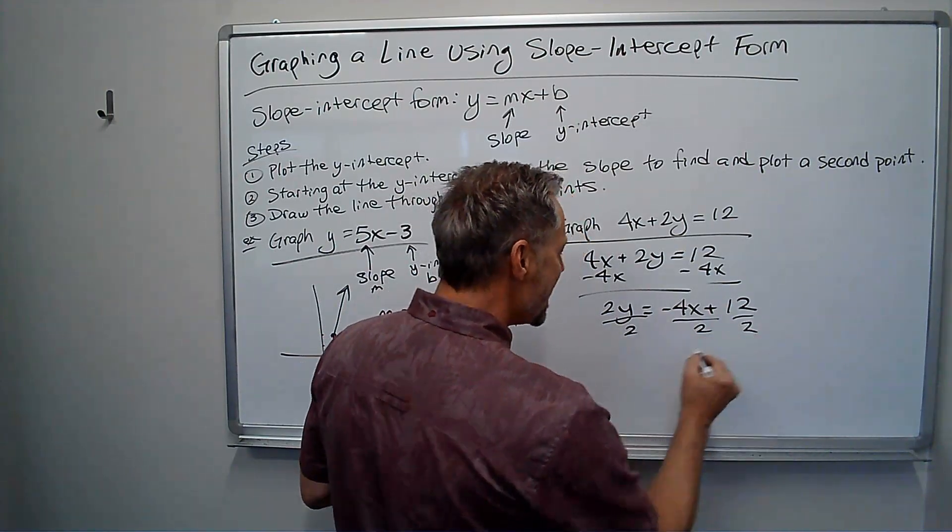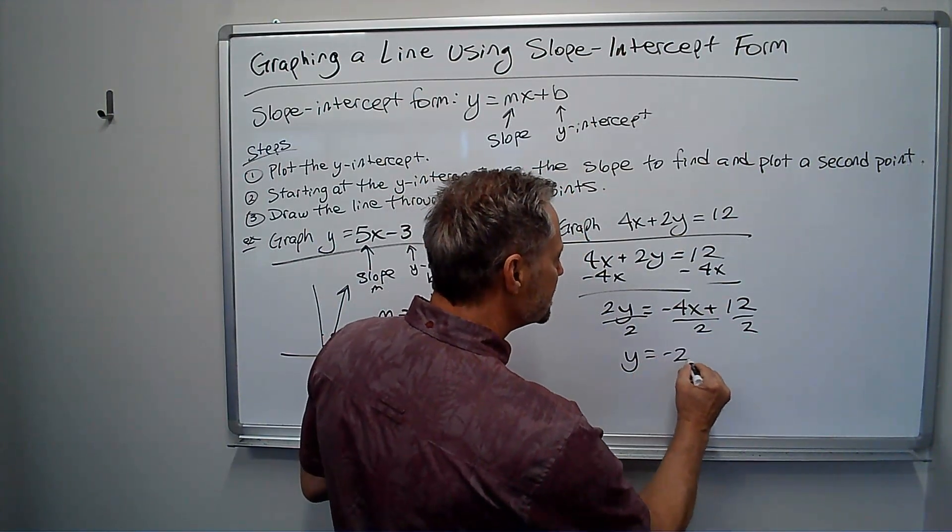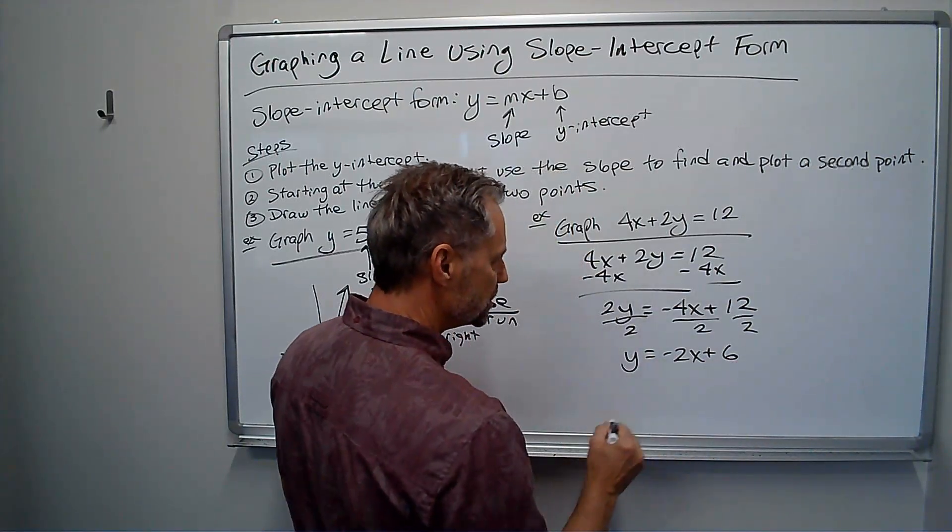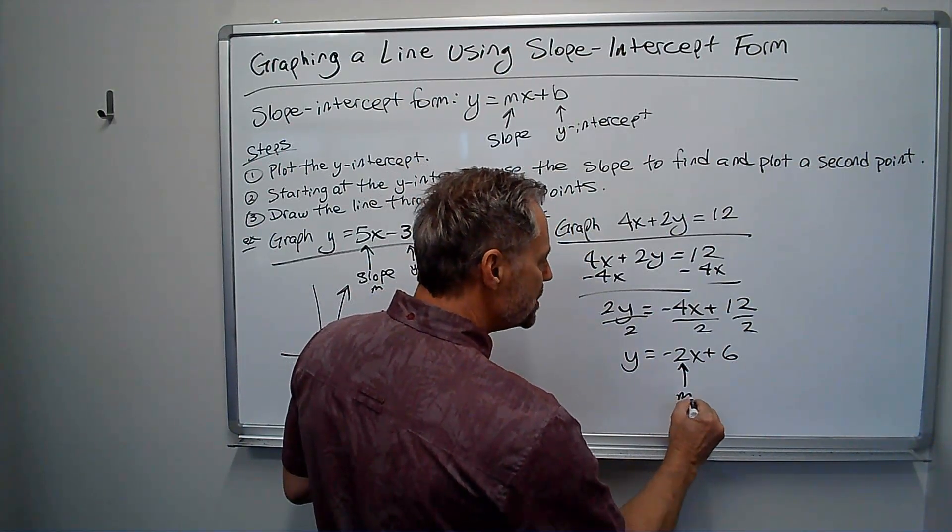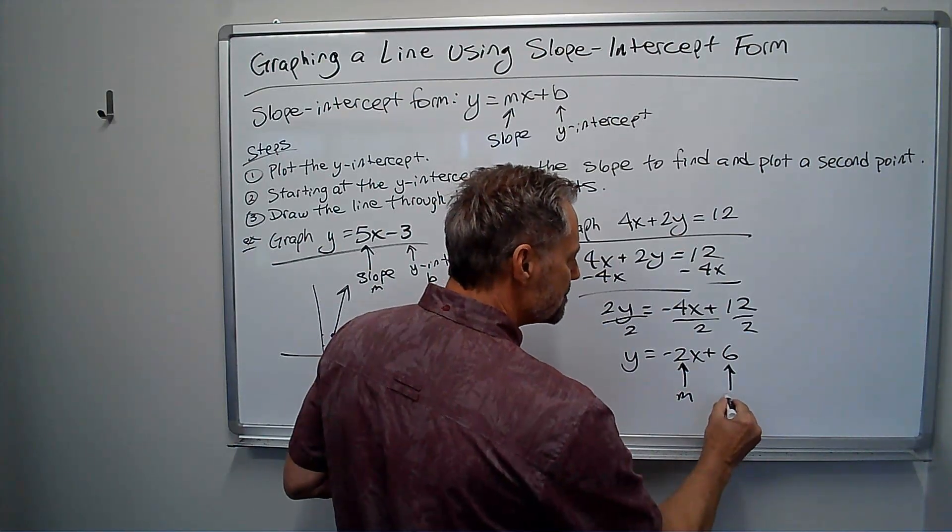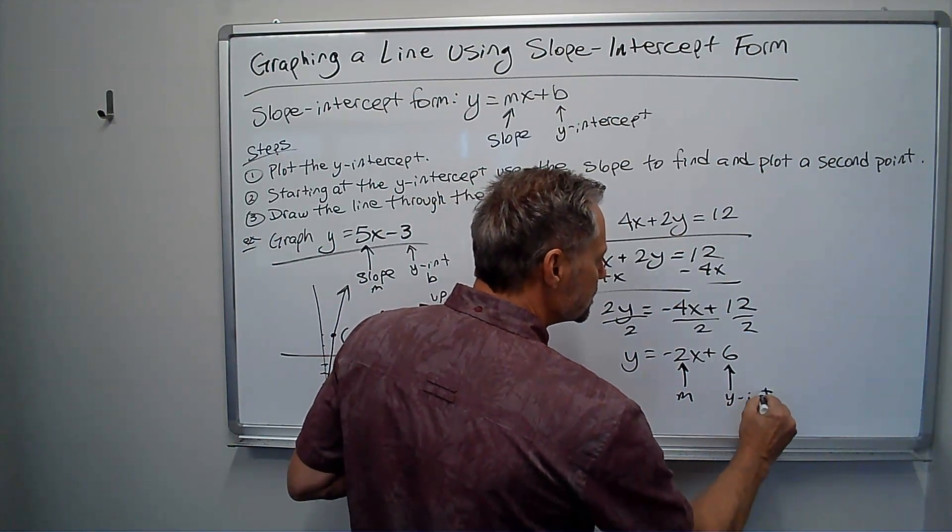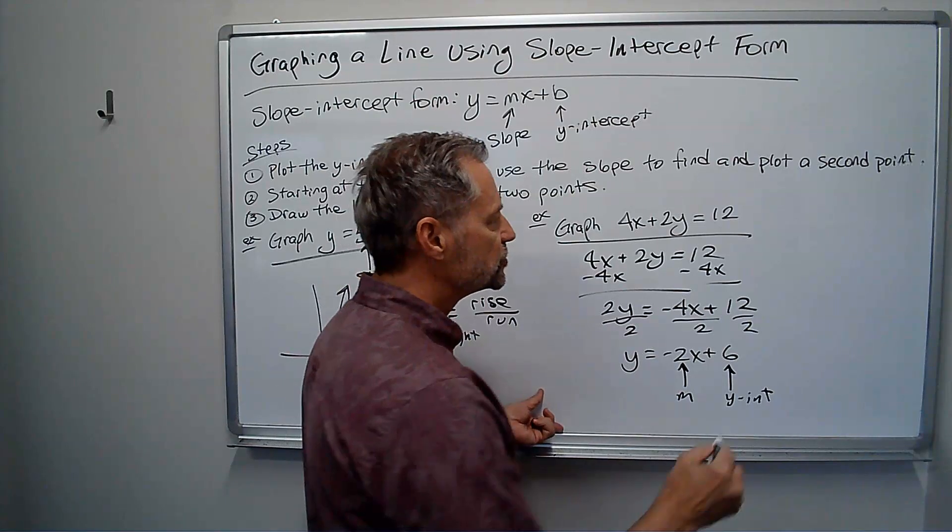And now I have to divide by 2. But remember, when I divide by 2, I divide everything by 2. So I get y equals negative 2x plus 6. So this time my m or my slope is negative 2, and my b or my y-intercept is 6.